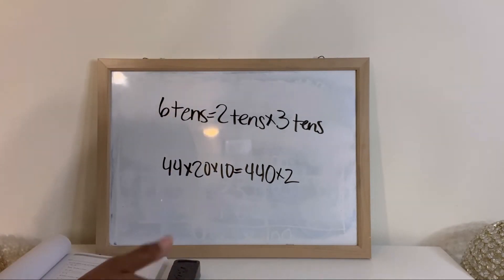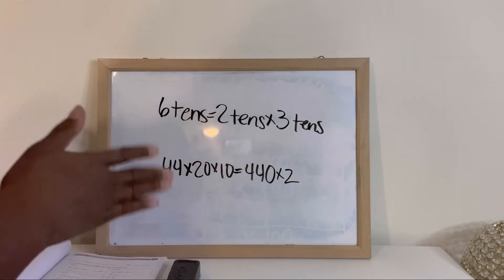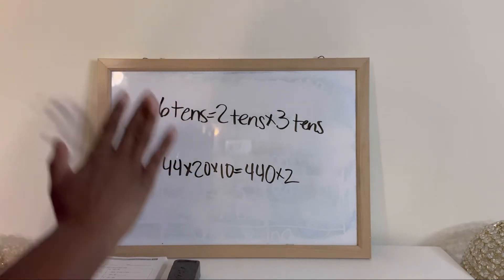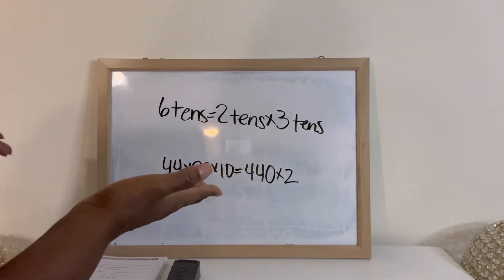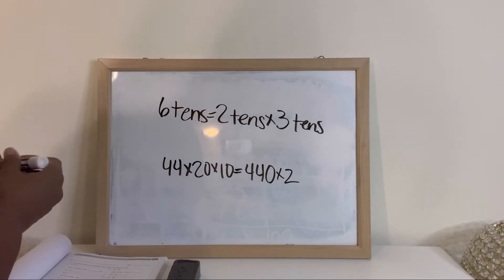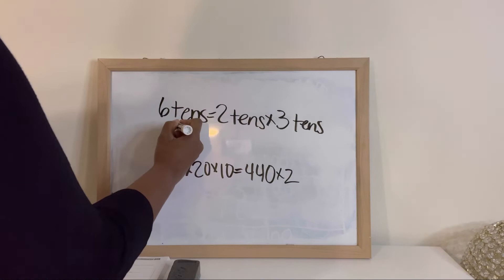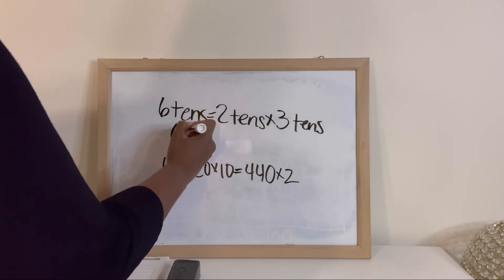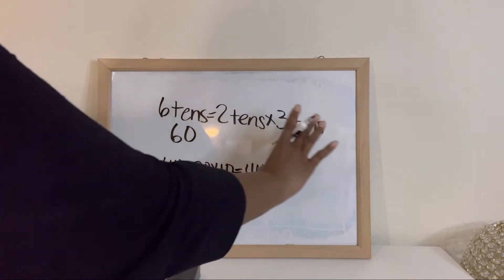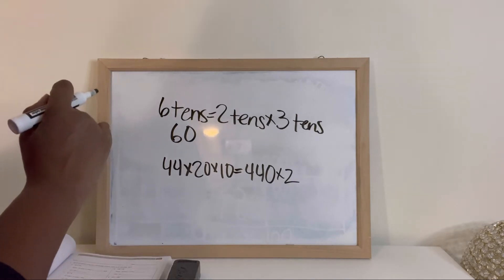So let's just see if this is so. So 6 tens - we know when it's tens, you add a zero. So we're going to put this in standard form to see if it's true.